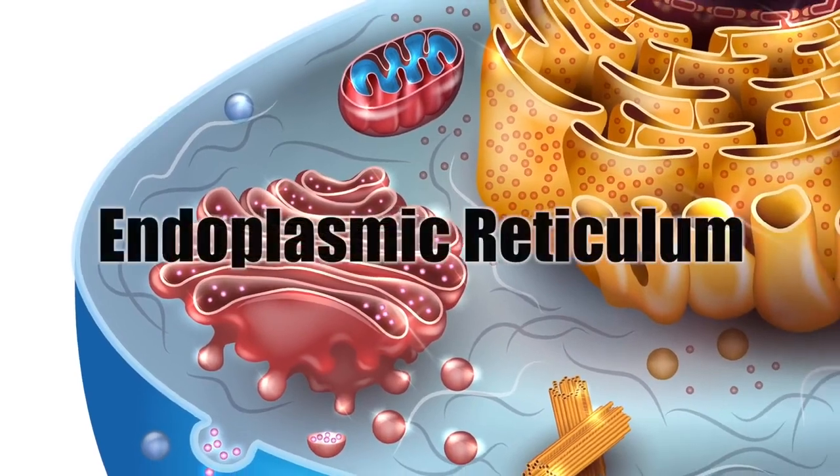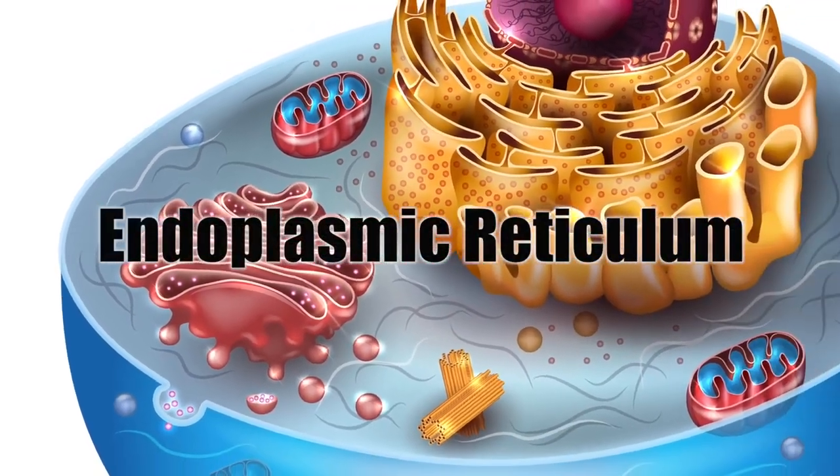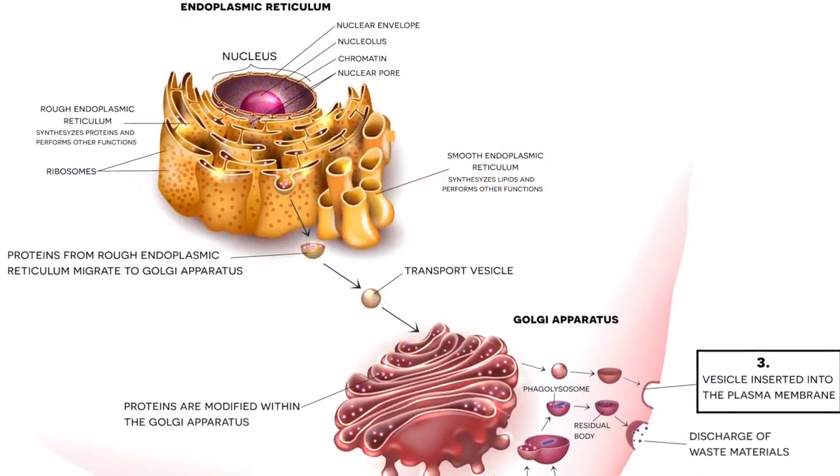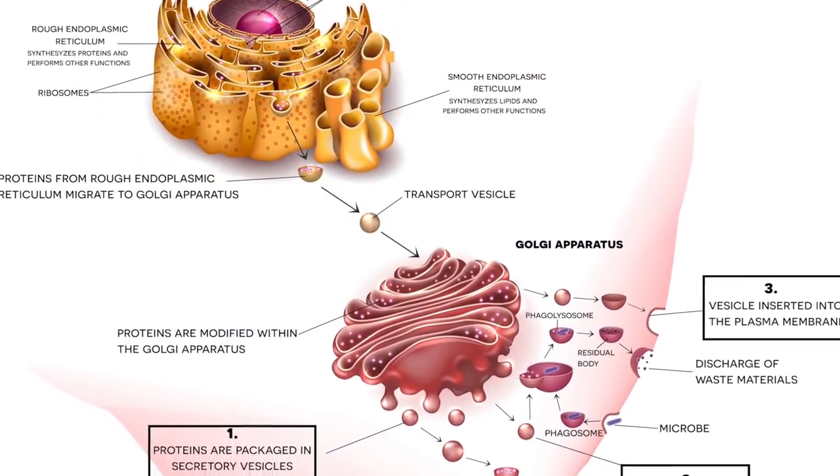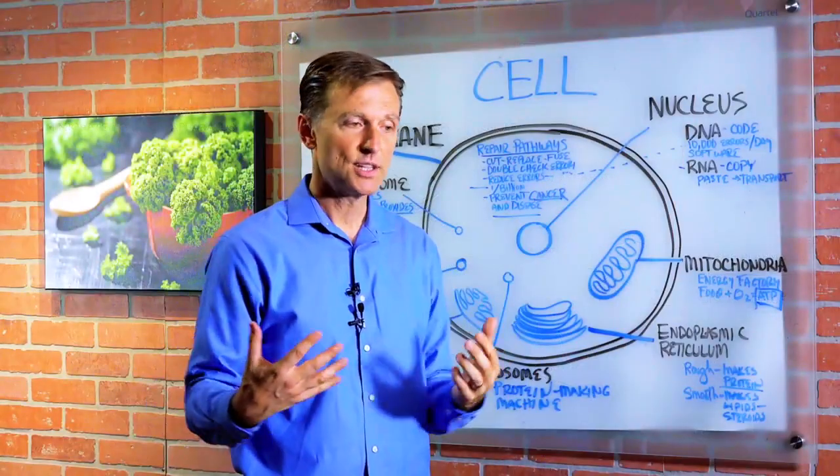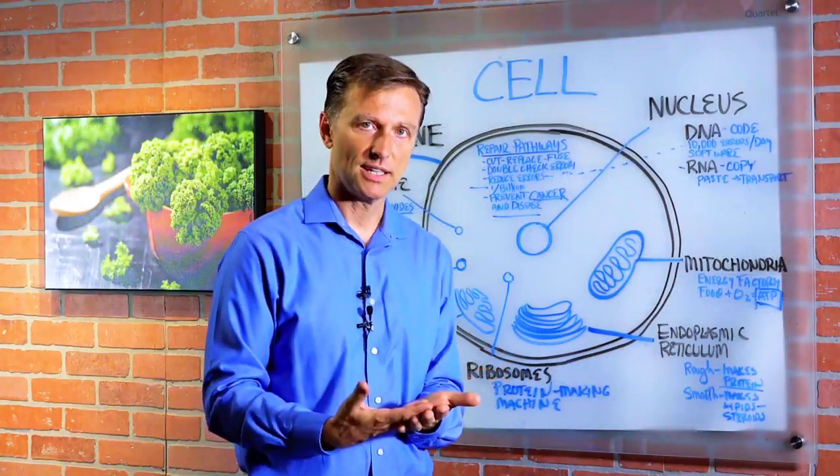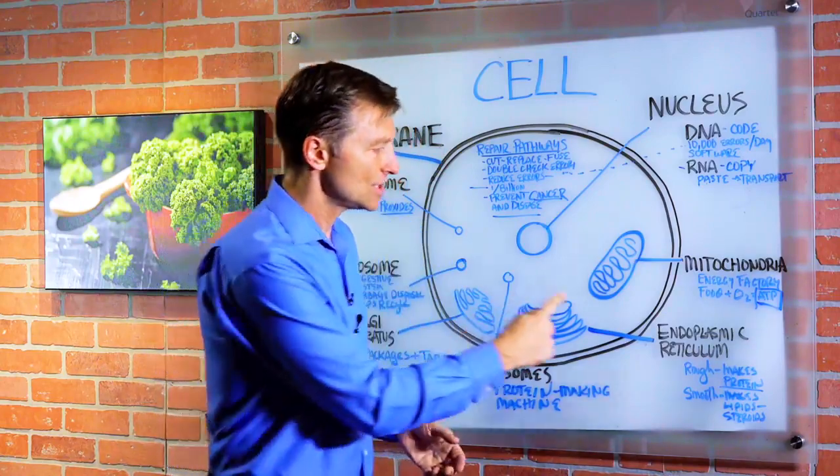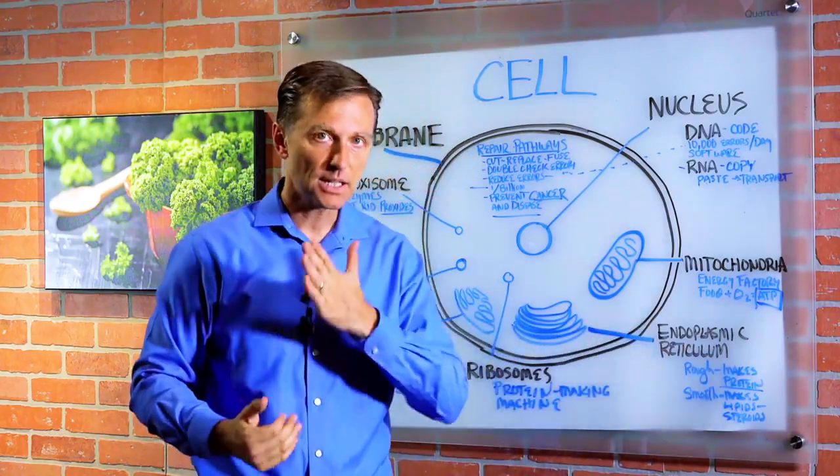And then you have something called the endoplasmic reticulum, which is the part of the cell that either makes protein if it's the rough part or makes lipids or steroids if it's the smooth part. Because a lot of your body tissue is composed of fat and protein, hair, nails, brain, nerve, etc. So this is one part of the assembly line in the manufacturing of body tissue.